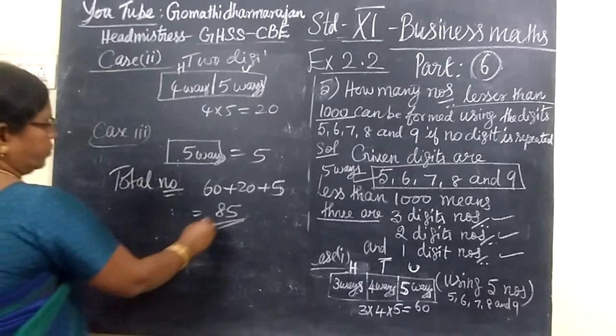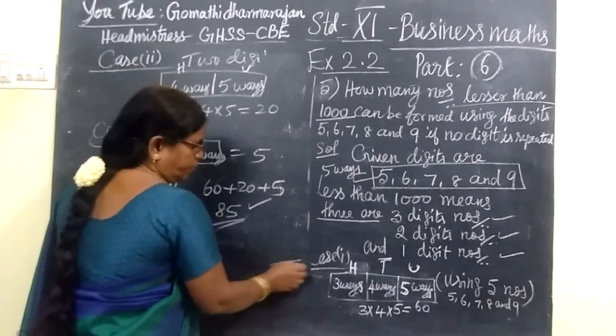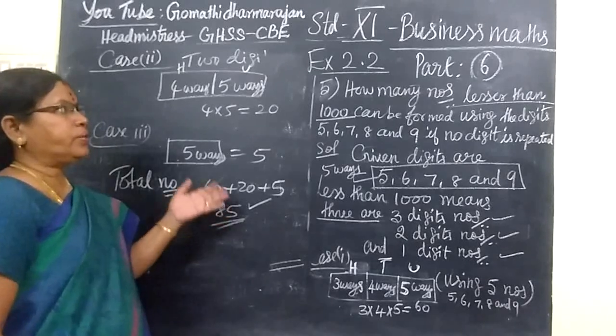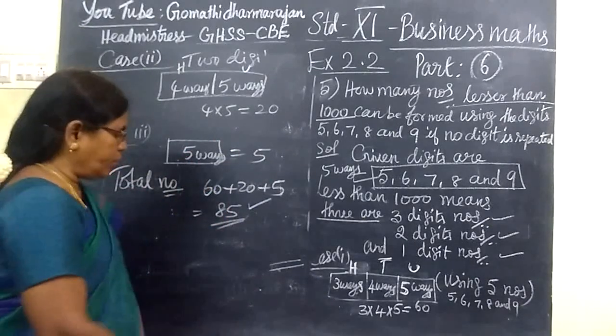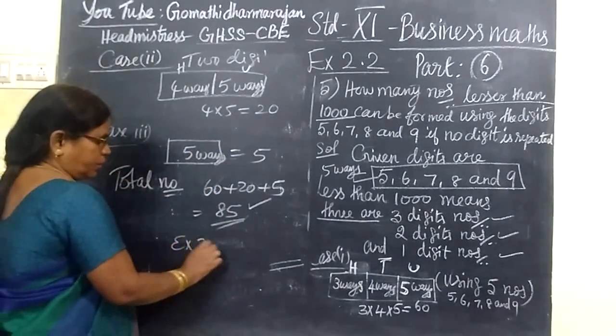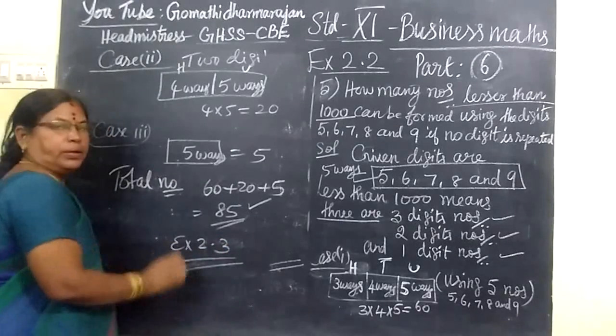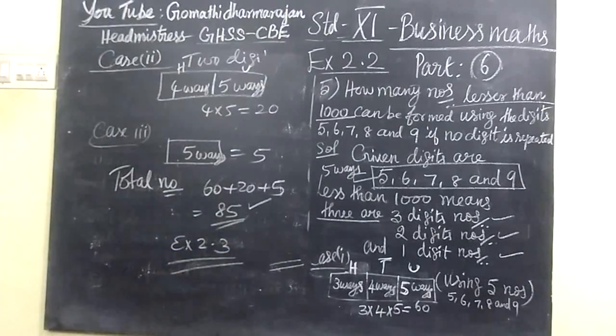So this is today's class. So totally, we can form 85 numbers. So in the next class, we see exercise 2.3. So in the next class, exercise 2.3. That's it.